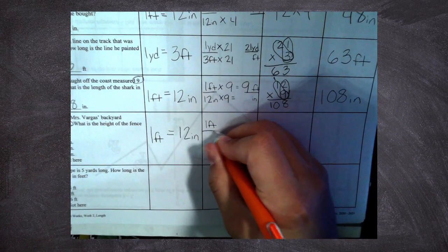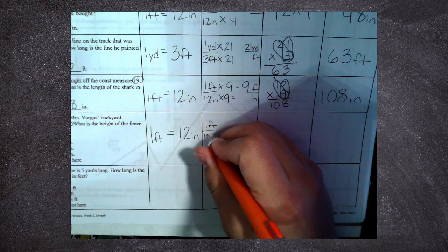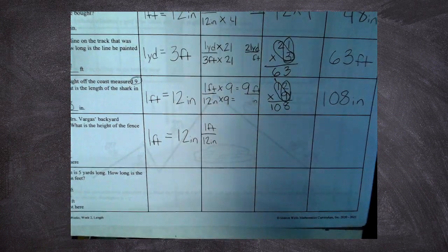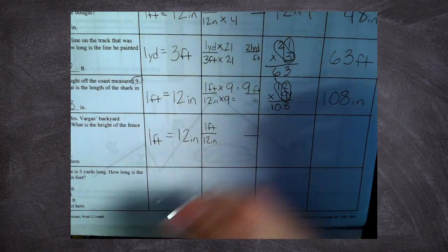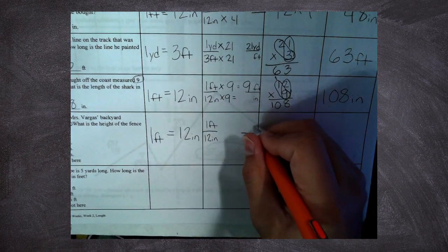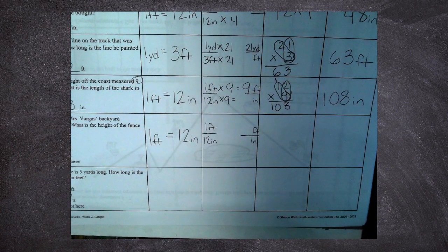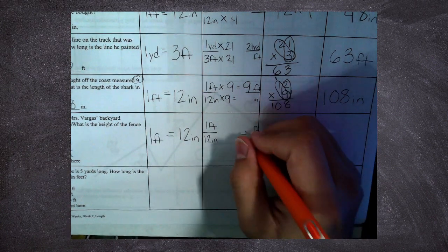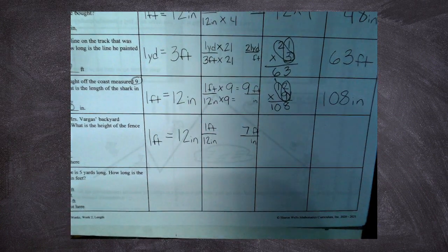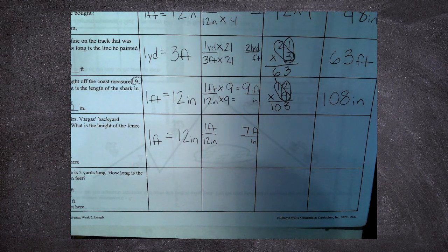My feet on top, inches on the bottom, one foot but twelve inches. I keep the same thing over here on this side on the top, on the bottom, but I need to change these numbers. When they measured Mrs. Vargas's fence, it was seven feet high. I don't know how many inches that is, but I can figure it out.